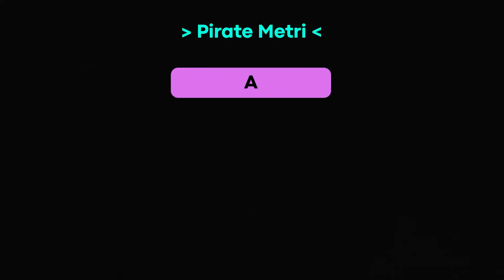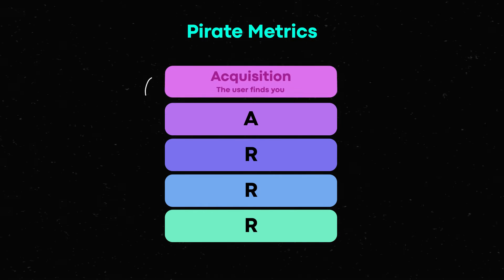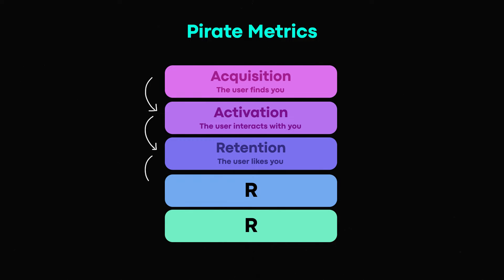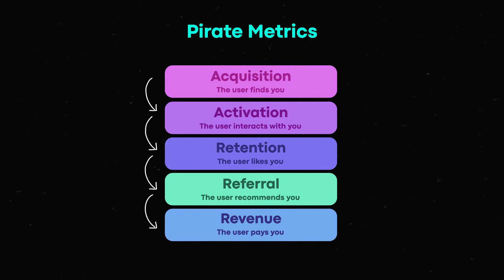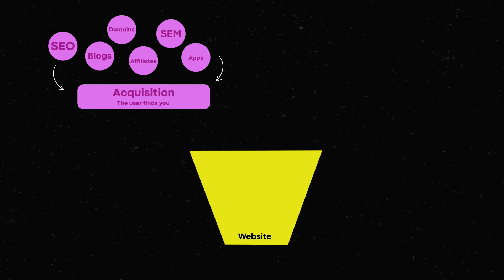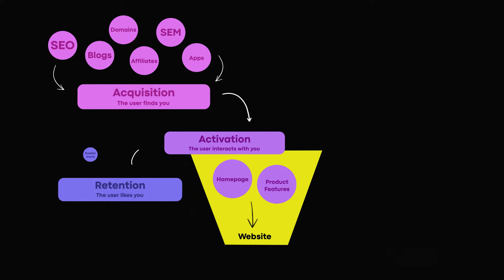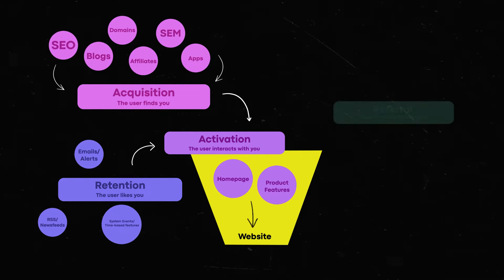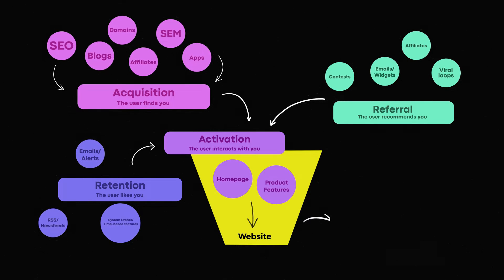Startup Pirate Metrics — A-A-R-R-R. Originally called Startup Pirate Metrics from Dave McClure, it is acquisition, activation, retention, revenue, and referral. Sometimes they flip the last two, but it is just a way to talk about that funnel — that flow from being a prospect coming in from traffic from Google, from Facebook, from other advertisements, a billboard with a QR code — all the way through to your website, to converting to a customer, and then referral, hopefully to refer out to friends to bring back and buy more.